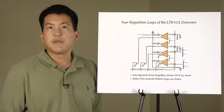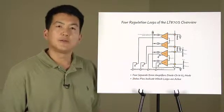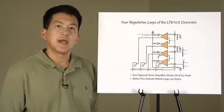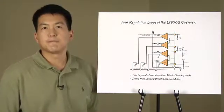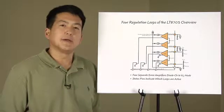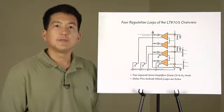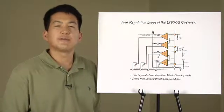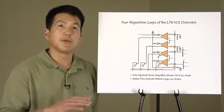Likewise, when the feedback in pin falls below the internal reference voltage, its error amplifier also pulls down on the VC pin. The feedback in pin can be used to ensure the input to the LT8705 does not fall below a predetermined level.